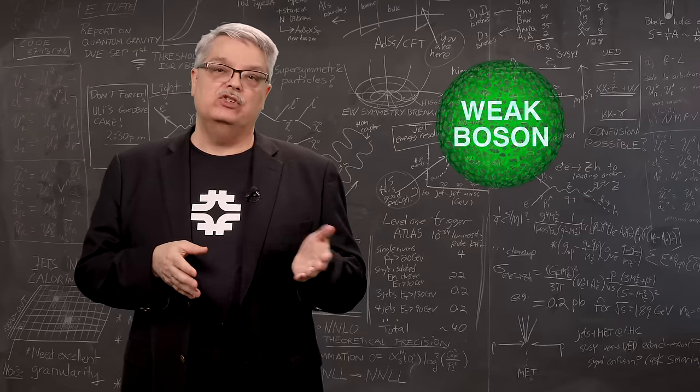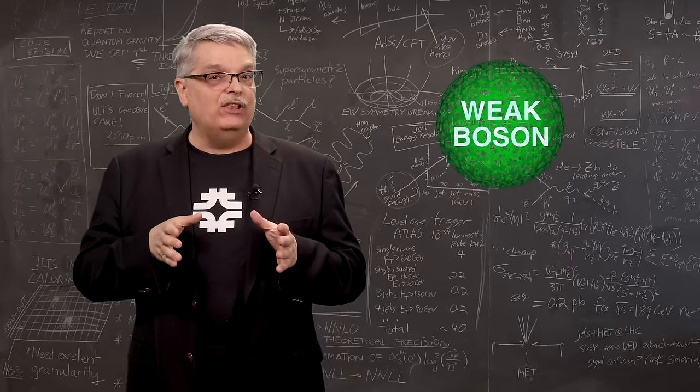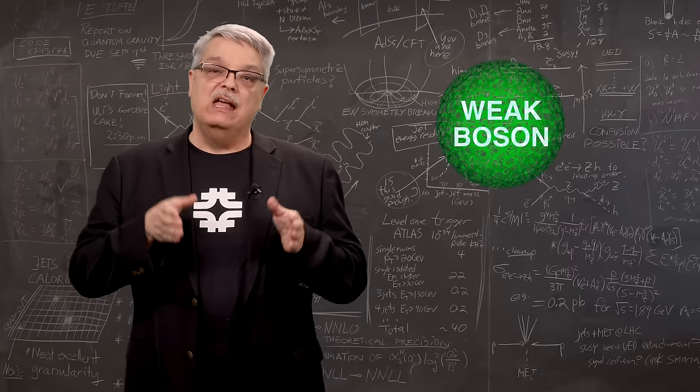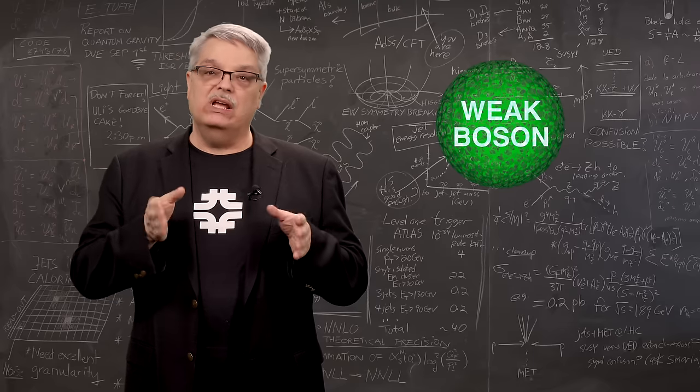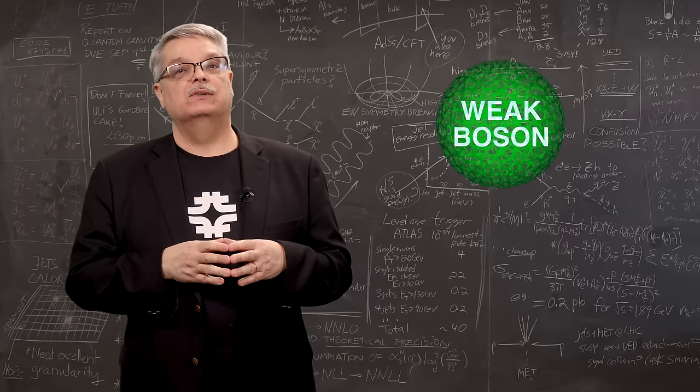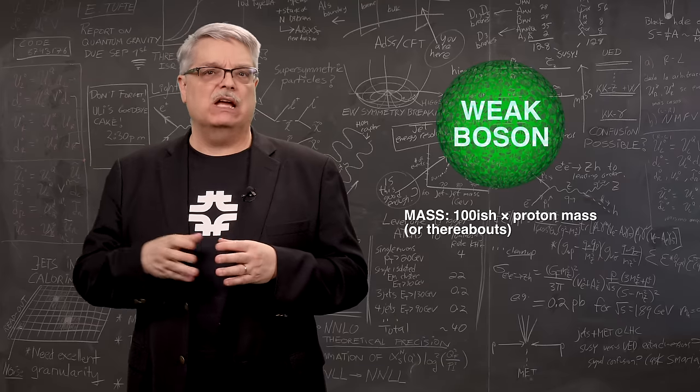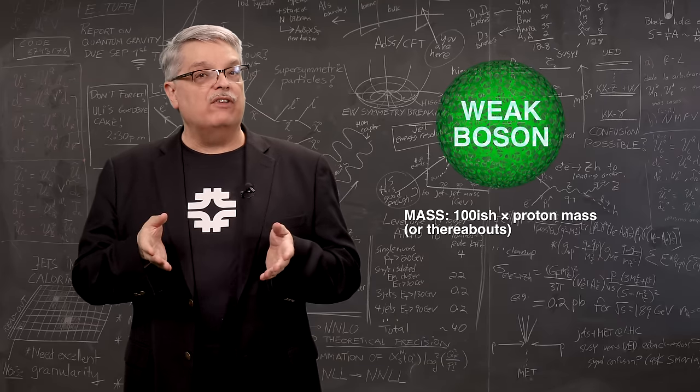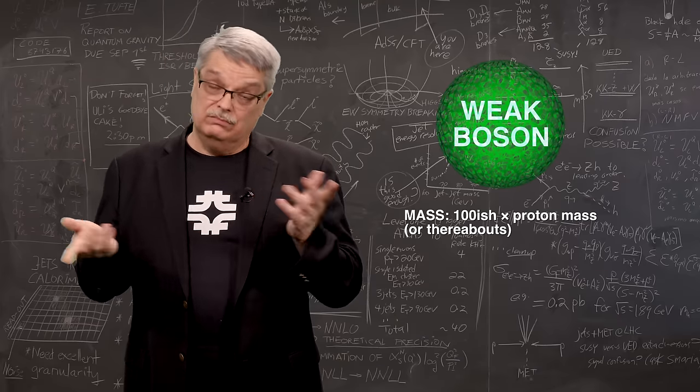Since mass is energy and energy doesn't have to be conserved in fleeting subatomic interactions, that means that weak bosons don't have a single and unique mass. While their favored mass is about 100 times the mass of a proton, you can find them with masses that are larger or smaller.